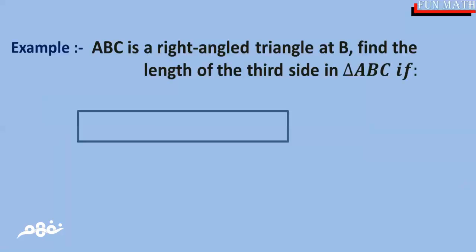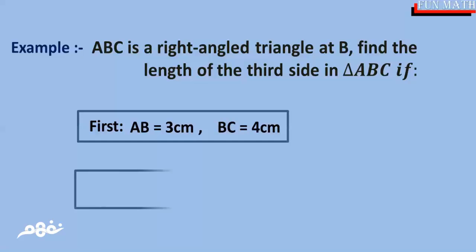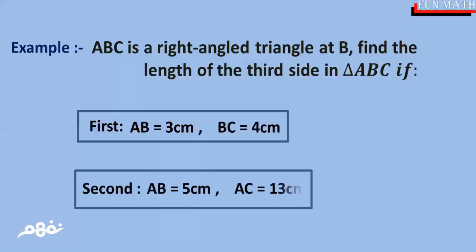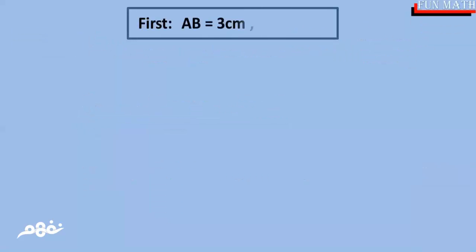Example: ABC is a right-angle triangle at B. Find the length of the missing side. First case: AB equals 3 centimeters, BC equals 4 centimeters. Second case: AB equals 5 centimeters and AC equals 13 centimeters.